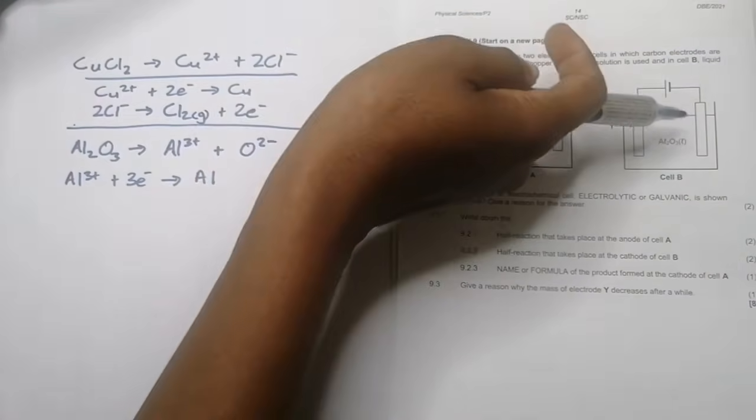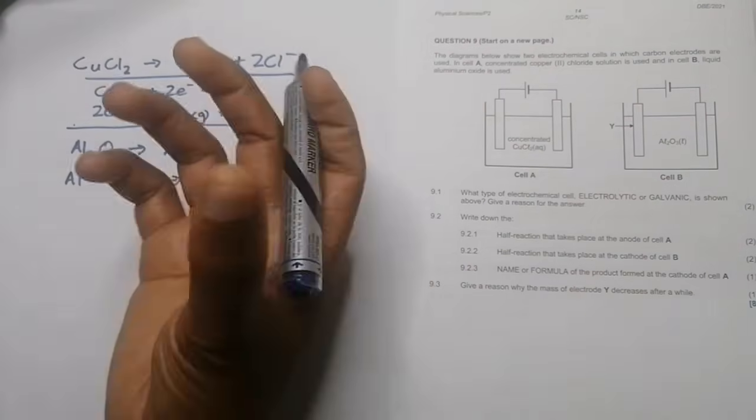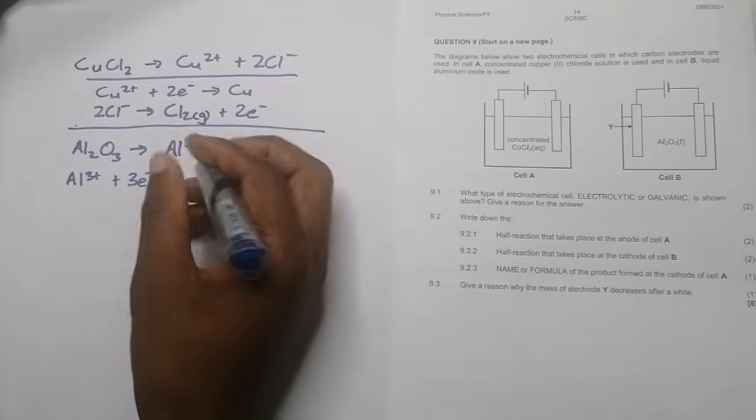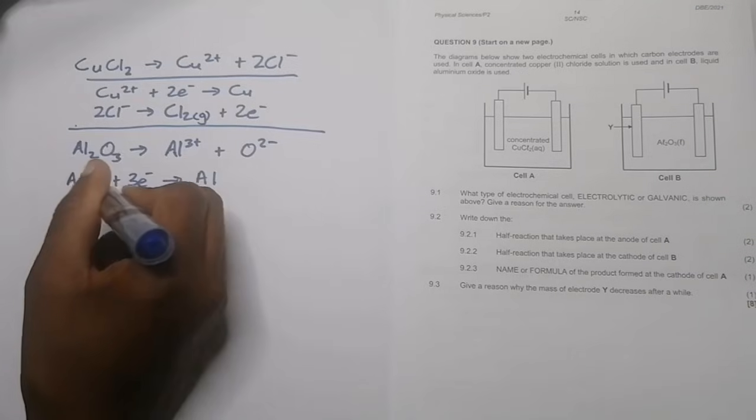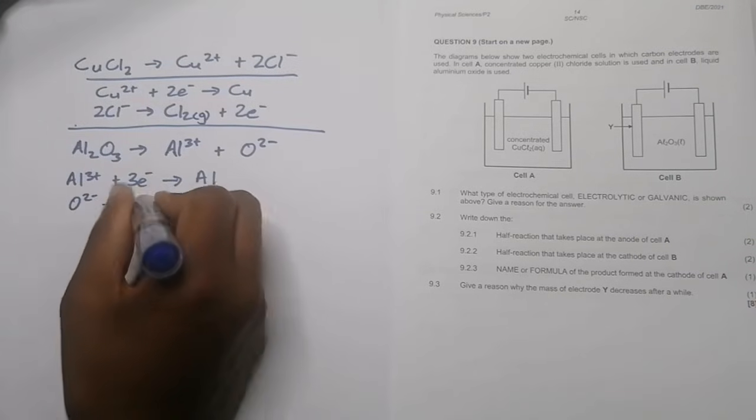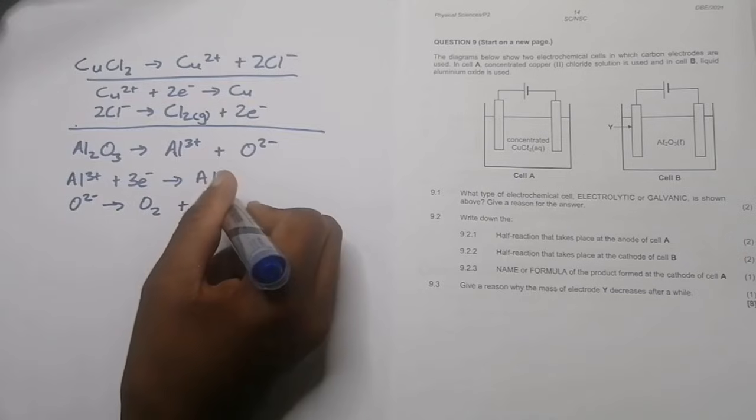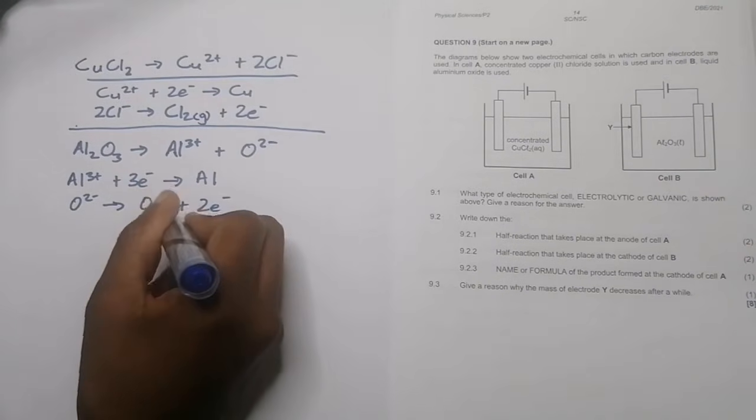So that electrode would actually tend to grow bigger in size because of the aluminum that is forming around it. And then on the other one you've got O²⁻ which now becomes oxygen by giving away electrons.